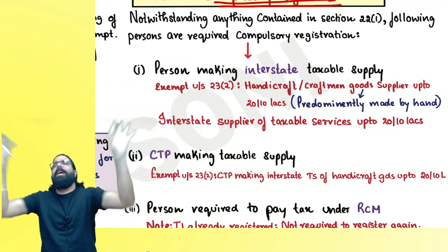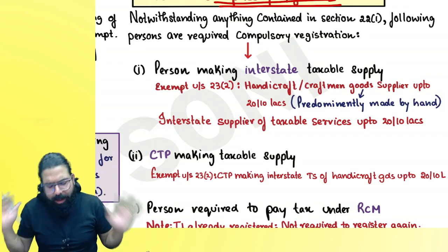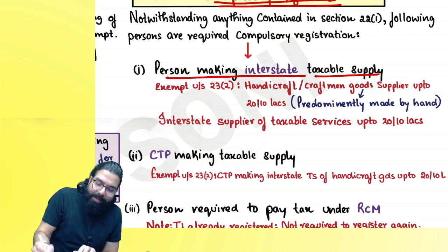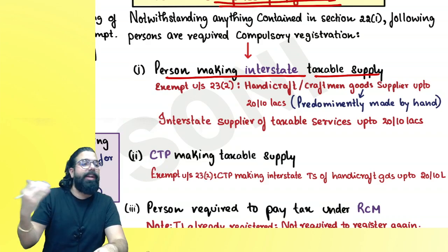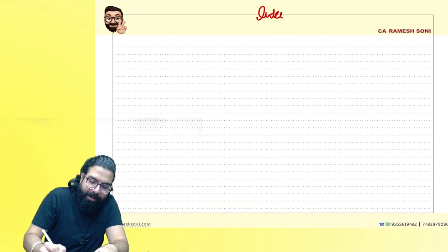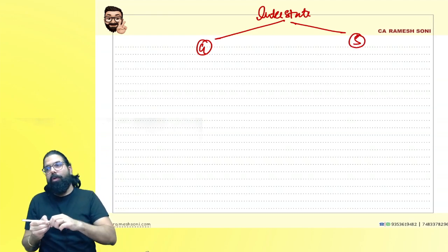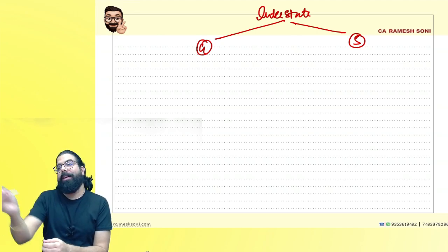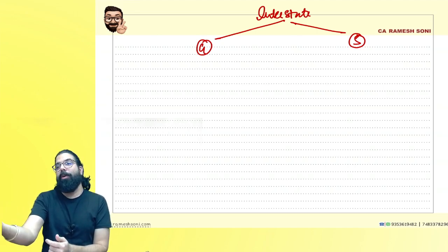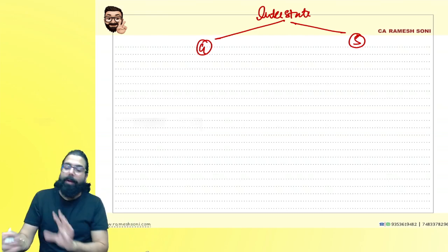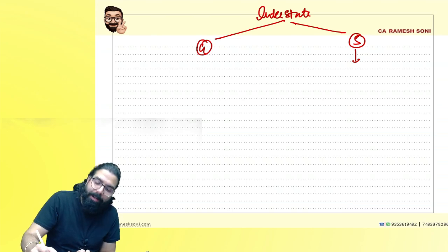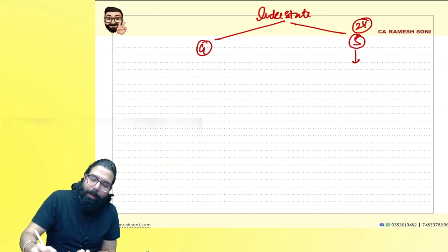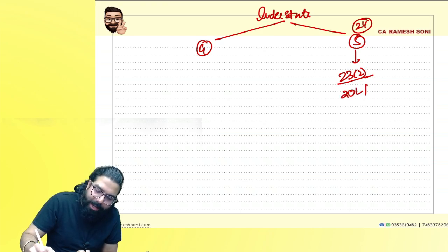Compulsory registration is required irrespective of turnover for certain persons. A person making interstate taxable supply — if you are supplying from one state to another — is required compulsory registration. However, supplier of services started objecting: a chartered accountant filing one return for a person in Delhi for ₹500 shouldn't need compulsory GST registration. So the government used power under section 23(2) and exempted them up to ₹20 lakh or ₹10 lakh.